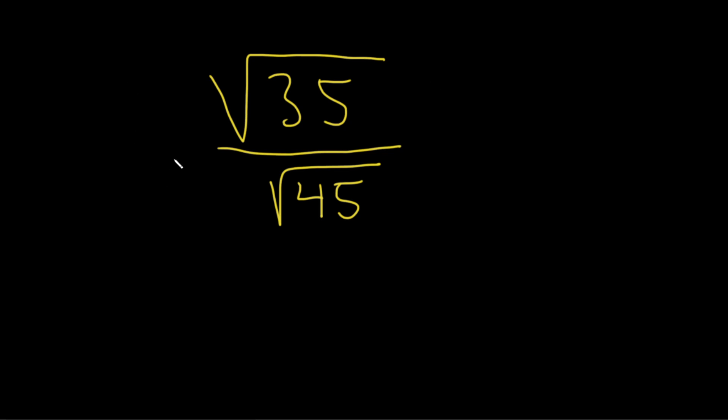Hi, in this video we're going to simplify these radicals. So we have the square root of 35 divided by the square root of 45.